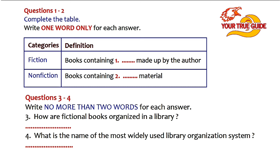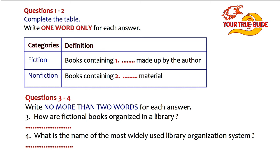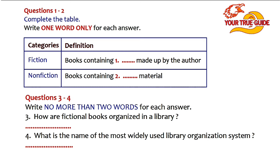All the fictional books in a library are grouped in one section. They are arranged alphabetically by the last name of the author. Many libraries also label the spines of all books of fiction with the letters FIC or F. All libraries have a system for organising and classifying non-fiction books. The most widely used system is the Dewey Decimal System. It was designed by an American librarian named Melvin Dewey. It is called a decimal system because it divides all non-fiction books into ten major categories, which are further divided into subdivisions.